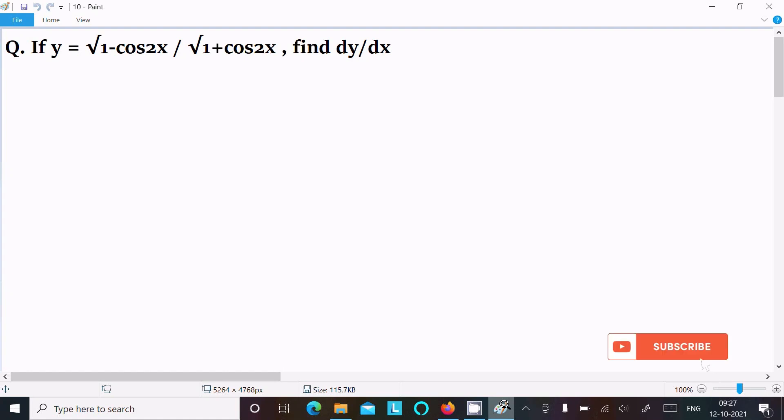In this lecture I am going to find dy/dx if y equals root 1 minus cos 2x divided by root 1 plus cos 2x. Let's see the answer. First, writing the given y equals under root 1 minus cos 2x divided by 1 plus cos 2x.